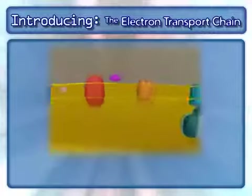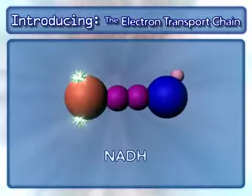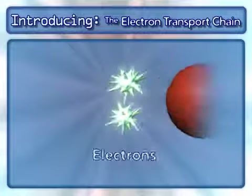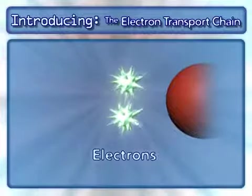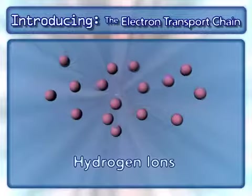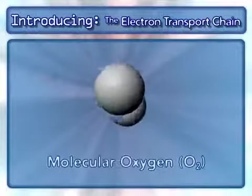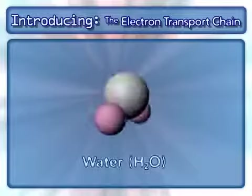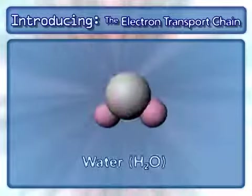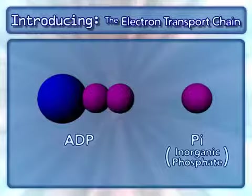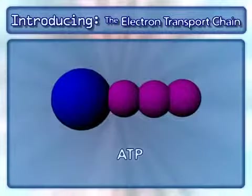Other key components in this process are NADH and the electrons from it, hydrogen ions, molecular oxygen, water, and ADP and inorganic phosphate, which combine to form ATP.